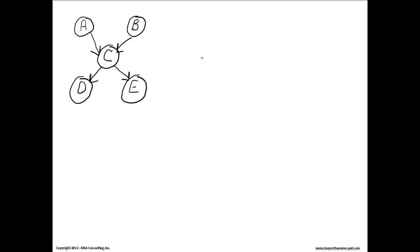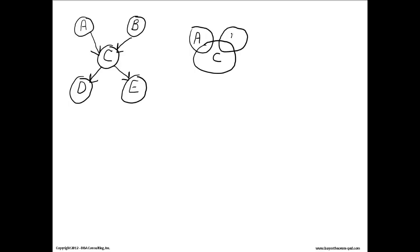Another way is Venn diagram-wise. I kind of like this way better. We have C, A, B, and D all represented.